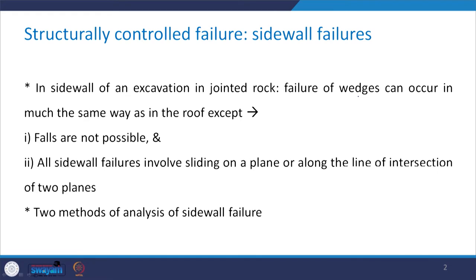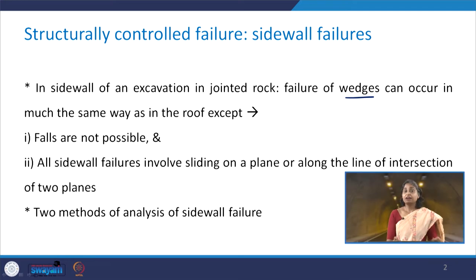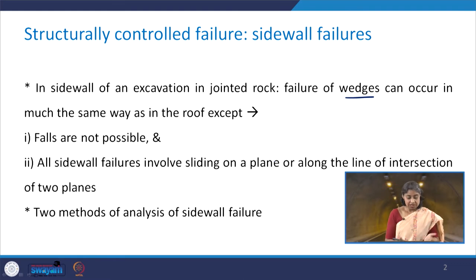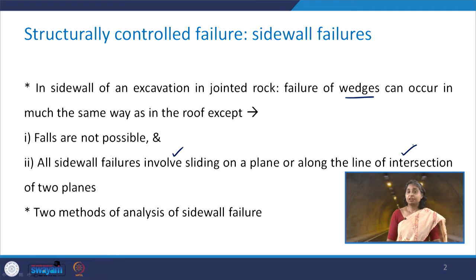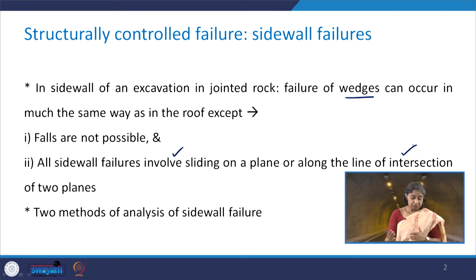In the side wall of an excavation in jointed rock, the failure of wedges can occur in exactly the same manner as in the case of roof, except that falls are not possible from the side walls. All side wall failures involve sliding on a plane or along the line of intersection of two planes. There are two methods of analysis of side wall failure; we will discuss the first method today.